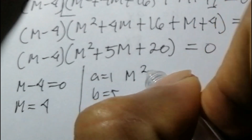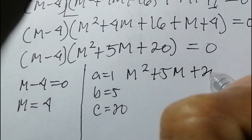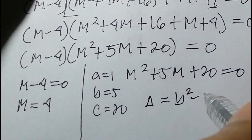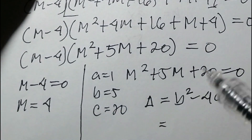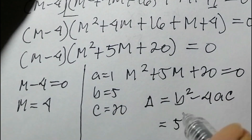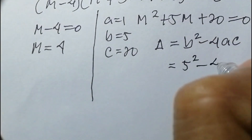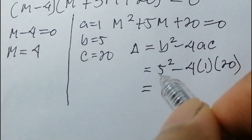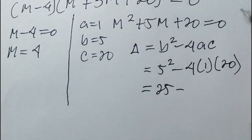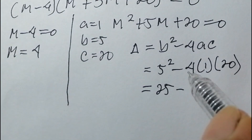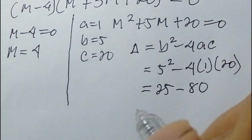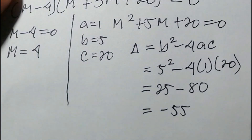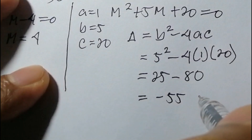The equation is m² plus 5m plus 20 equals zero. The discriminant formula is b² minus 4ac. So we get 5² minus 4 times 1 times 20, which is 25 minus 80, giving a discriminant of negative 55.